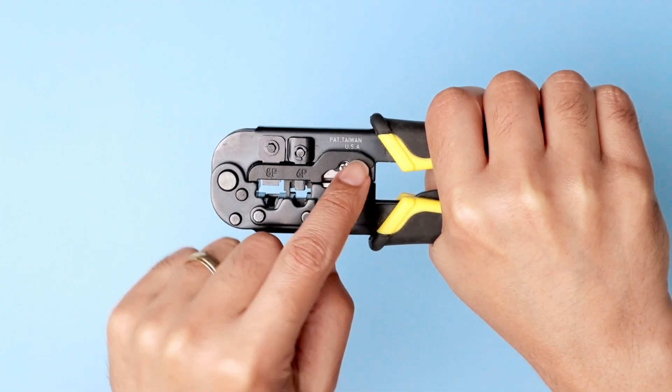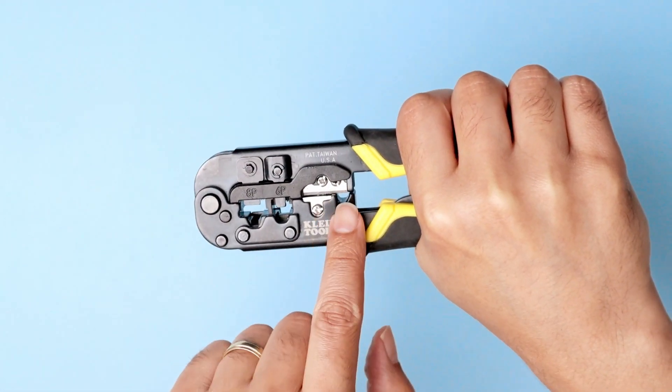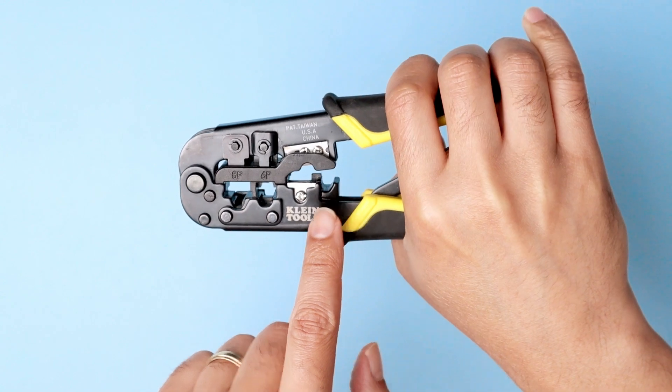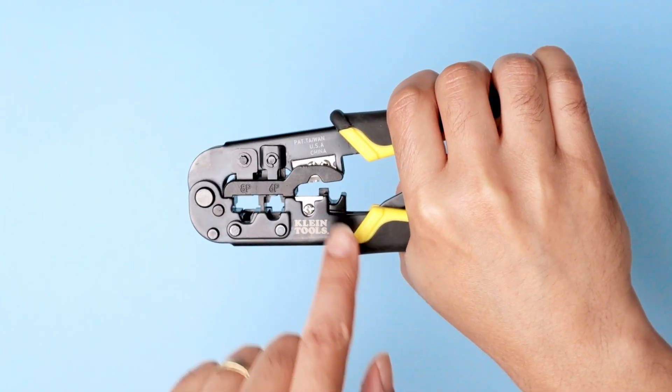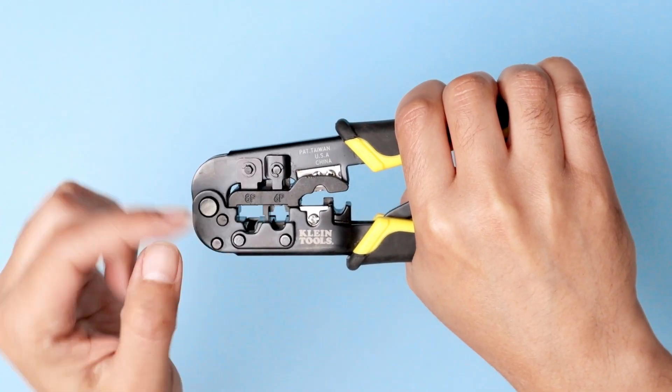You can cut the cable here and you can also strip it. So pretty easy, just put the cable here, press it, strip it, and you're ready to go to crimp here.